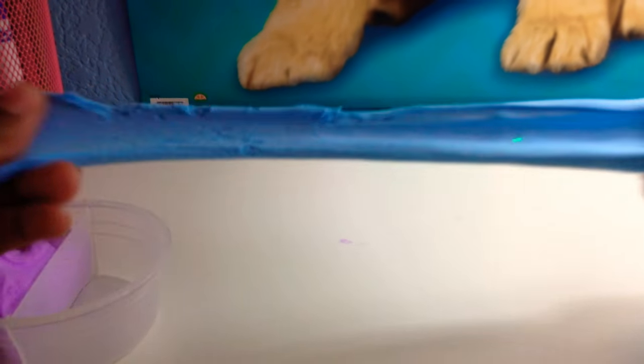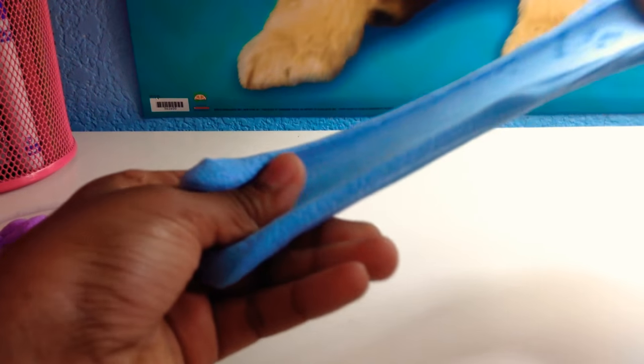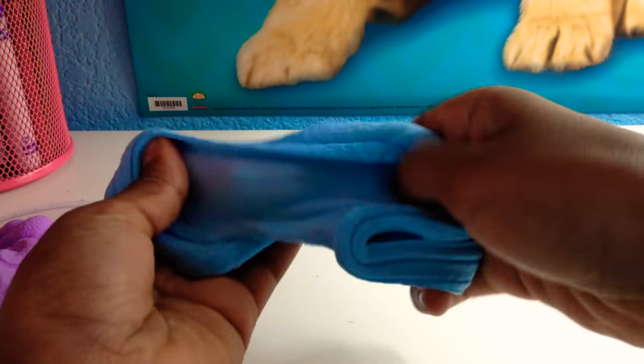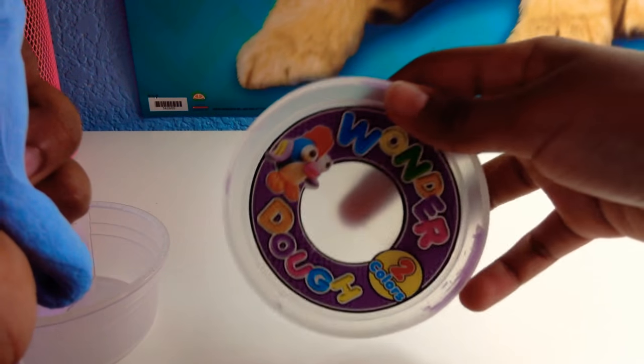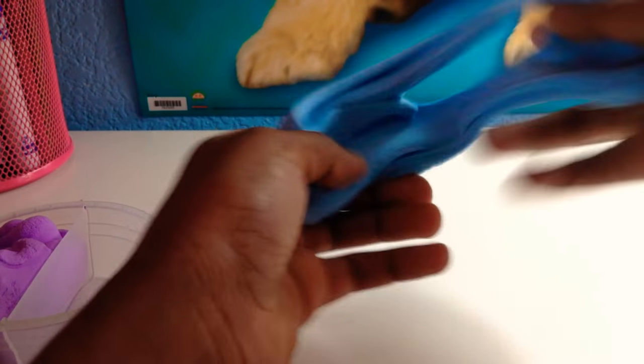This one is a blue one. It's stretchy and it's called Wonderdow, but it's exactly like clay slime.